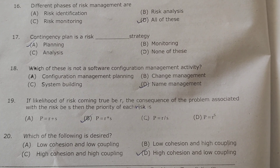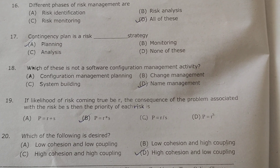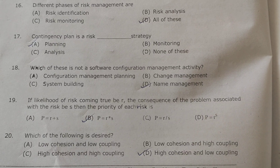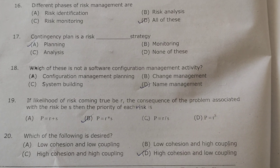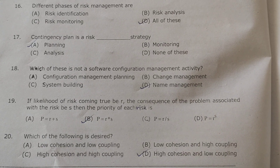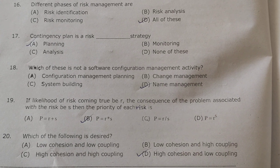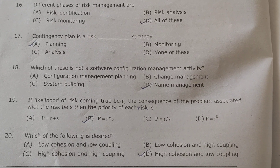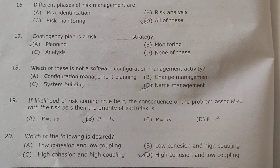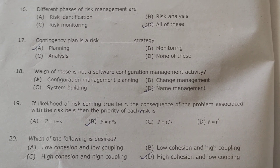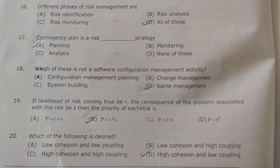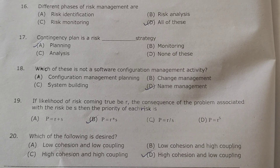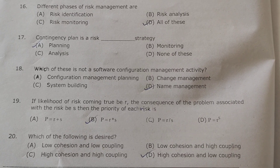If the likelihood of a risk coming true is R, and the consequence of the problem associated with the risk is S, the priority of each risk will be the product of these two. So the correct option is: priority = R × S.